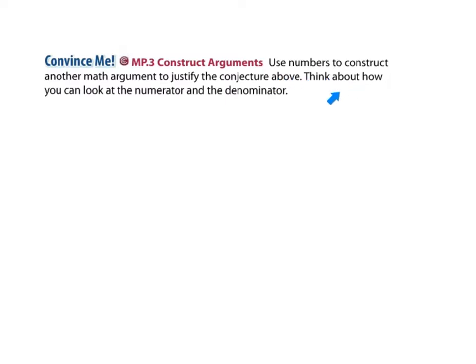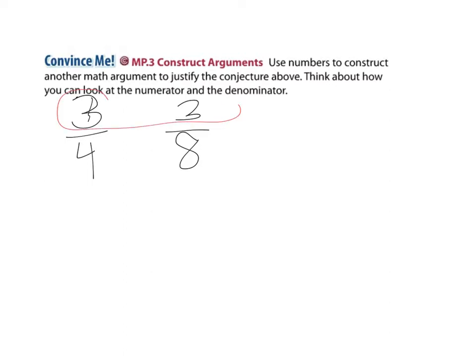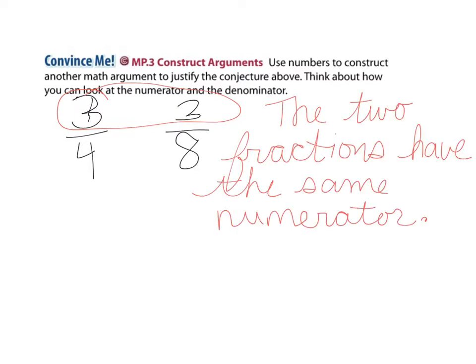Use numbers to construct another math argument to justify that conjecture. Think about how you can look at the numerator and the denominator. Our two fractions were three fourths and three eighths. The two fractions have the same numerator. Since they have the same numerator, I can compare the denominators. I know the fraction with the lesser denominator is the greater fraction. Since four is less than eight, I know that three fourths is greater than three eighths.